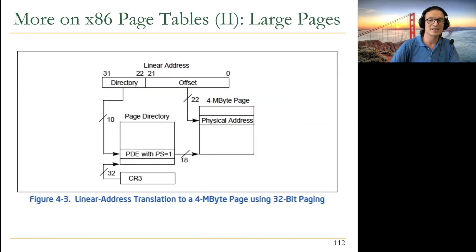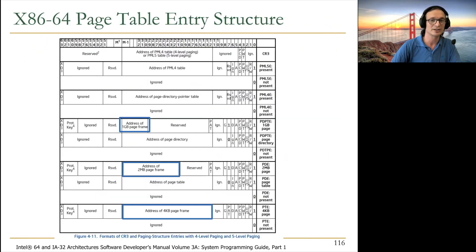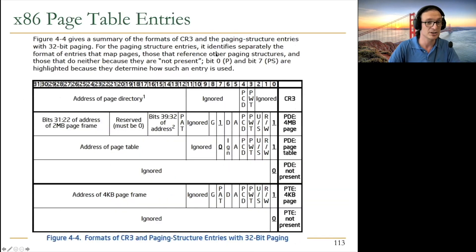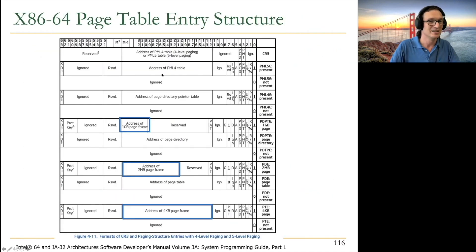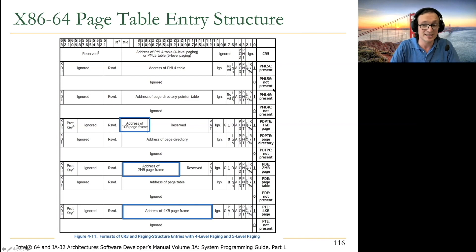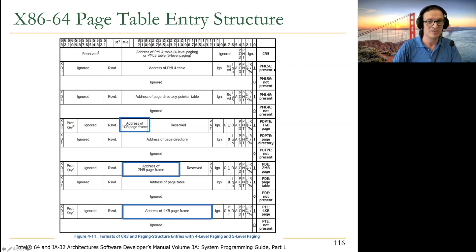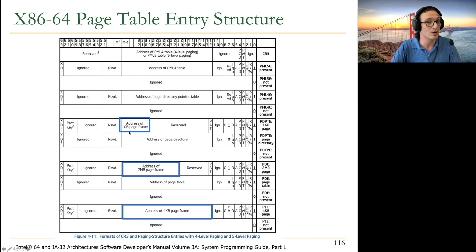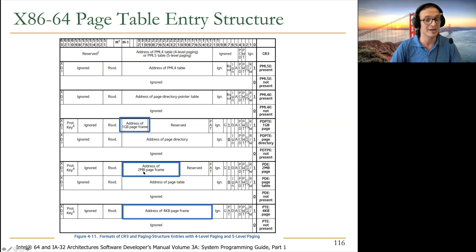Moving to more recent page table entries — in x86-64, page table entries have increased to 64 bits, up from 32 bits, because we need to address larger virtual and physical memories. There's possibility of five-level paging in x86-64. There are also three types of page sizes in x86 right now: one gigabyte, two megabytes, and four kilobytes.